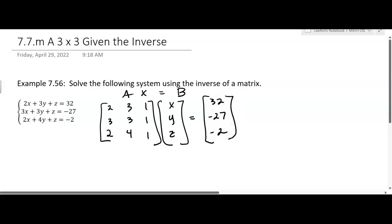Okay, and then I'm just going to tell you what A inverse is. A inverse is, where is it? Okay, negative 1, 1, 0, negative 1, 0, 1, and 6, negative 2, negative 3. That's the inverse.